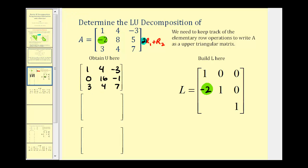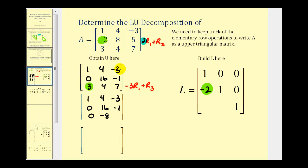Now let's obtain a zero in the next position. We need to add a multiple of another row to row three. Let's replace row three with negative three times row one plus row three. The first two rows stay the same. For the third row: negative three times one plus three is zero; negative three times four is negative twelve plus four, that's negative eight; negative three times negative three is positive nine, plus seven is sixteen. Our multiplier was negative three, which helped us obtain a zero in row three, column one. The opposite of negative three is positive three, so that element in L is positive three.